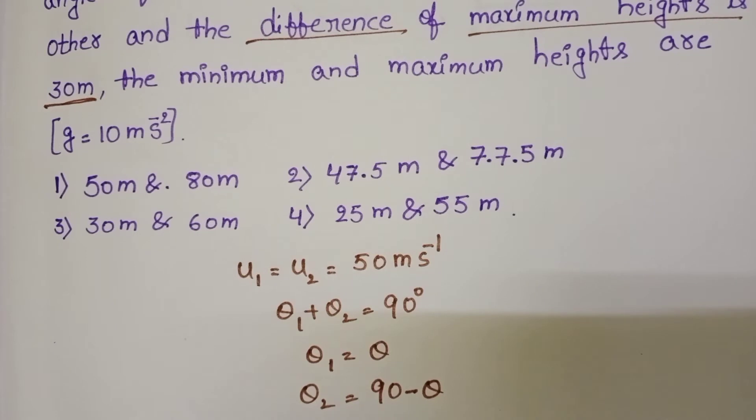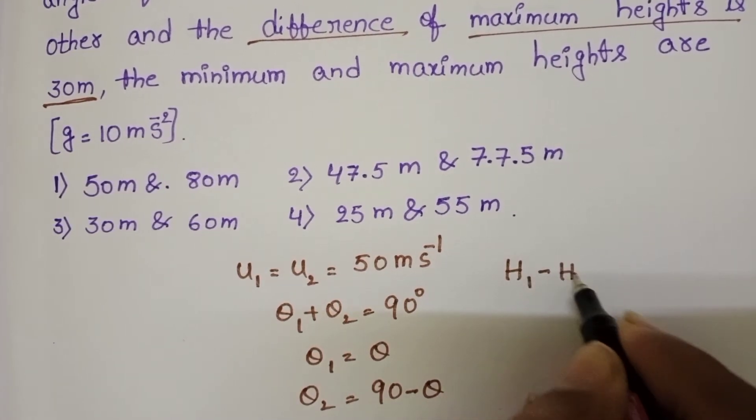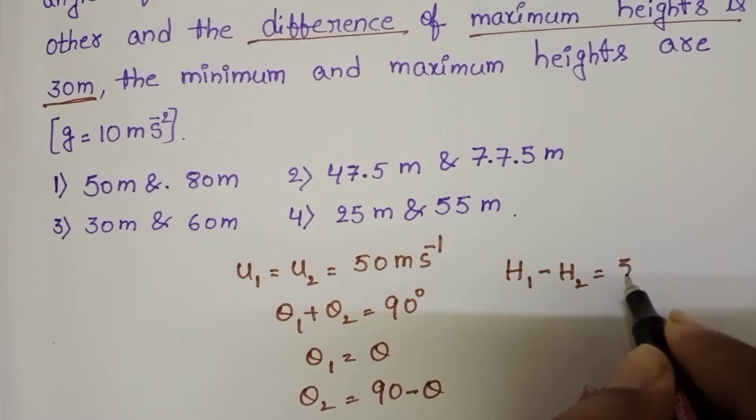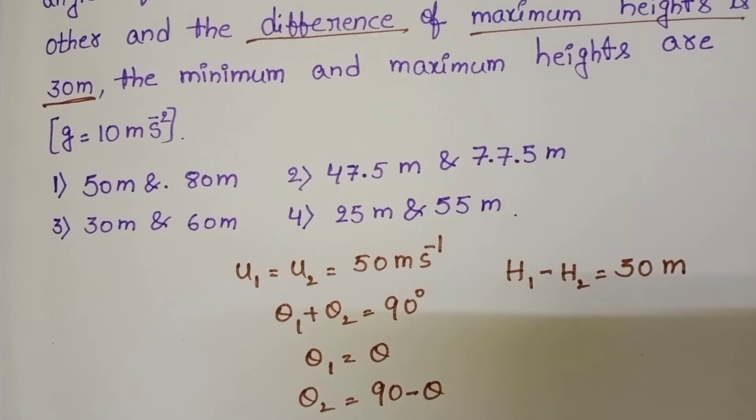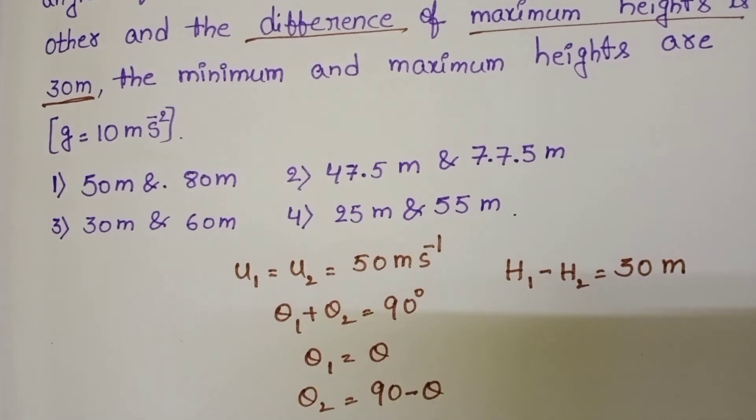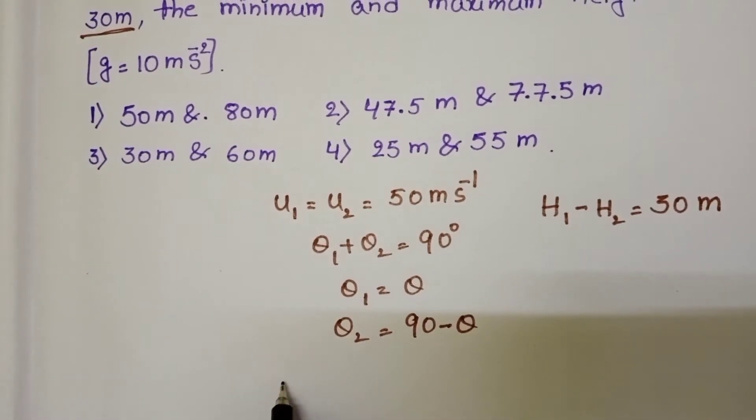The given condition is the difference of maximum heights equals 30 meters. So we have to find out maximum and minimum heights.